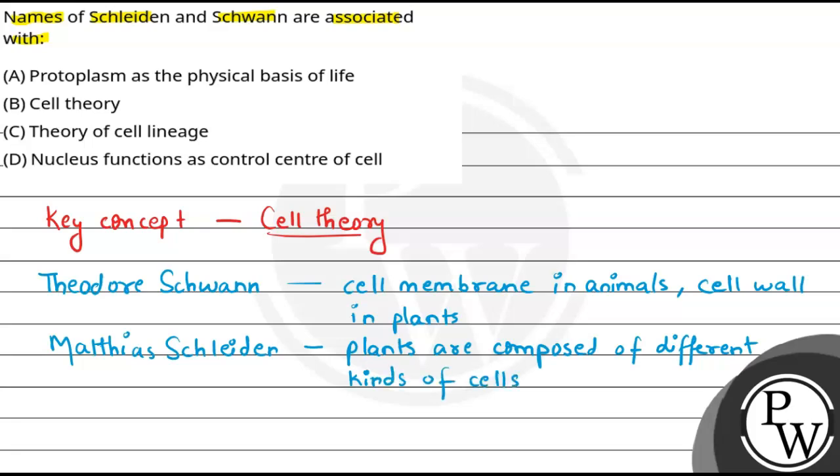They both made the cell theory, which according to them states that organisms are composed of cells and products of cells, and all cells arise from pre-existing cells. This was what they told us. So we can say the answer is Option B, that is cell theory. Because this was the hypothesis about bodies of animals and plants being composed of cells and products of cells. Together, they proposed cell theory.